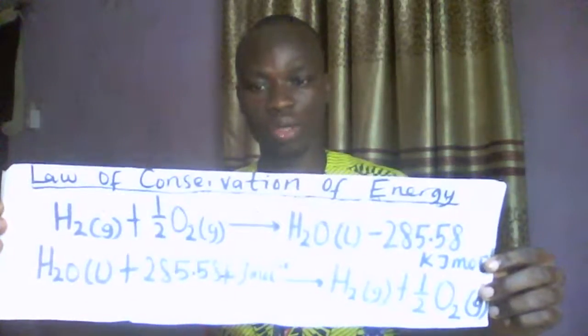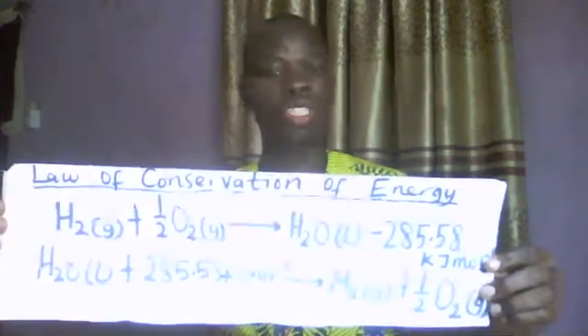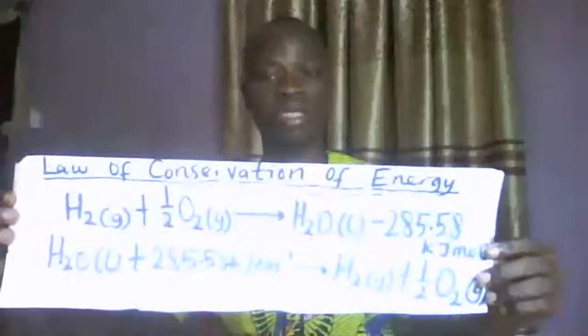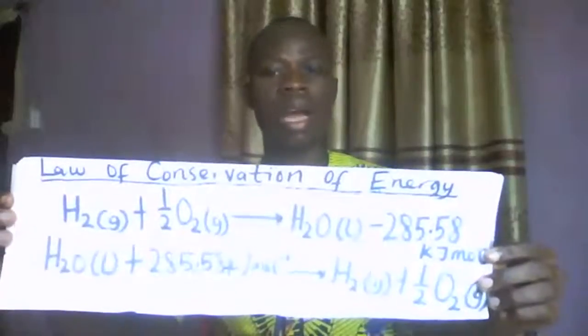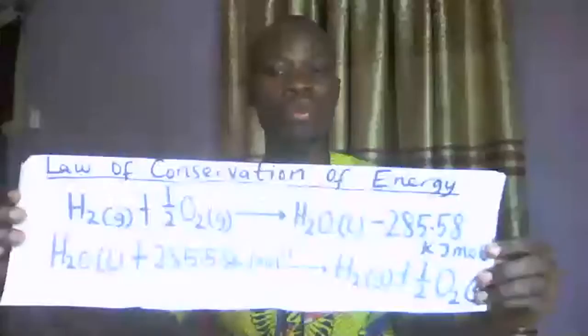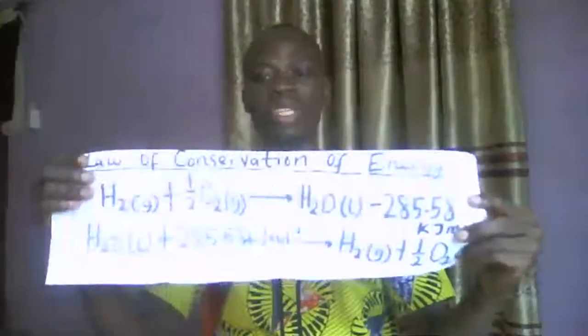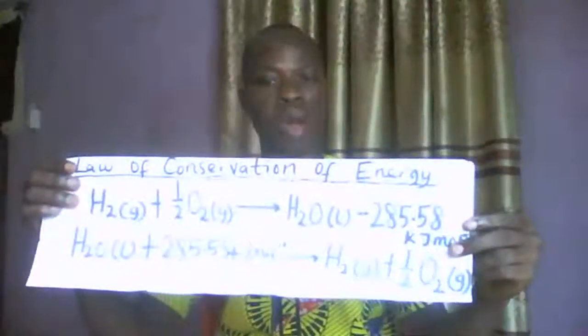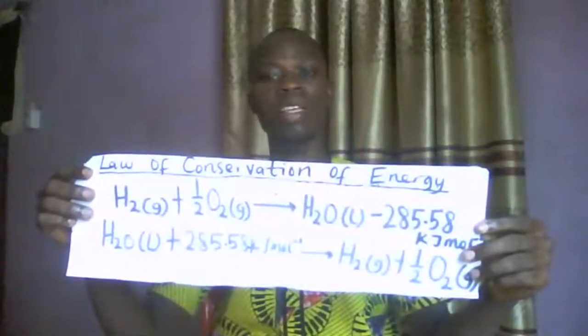Now, let's go back to conservation of energy — energy is neither created nor destroyed. We want to limit ourselves to thermochemical reactions, which are reactions that involve heat. For example, the chemical equation: hydrogen plus oxygen gives you a molecule of water. The energy change is indicated alongside the equation. Also, water formed during electrolysis can be split back into hydrogen and oxygen.